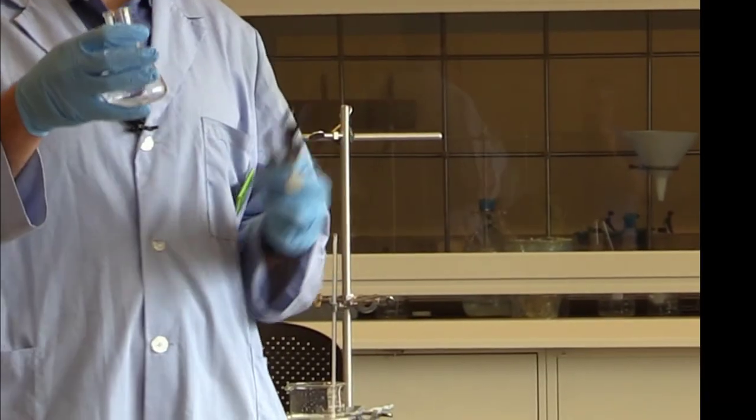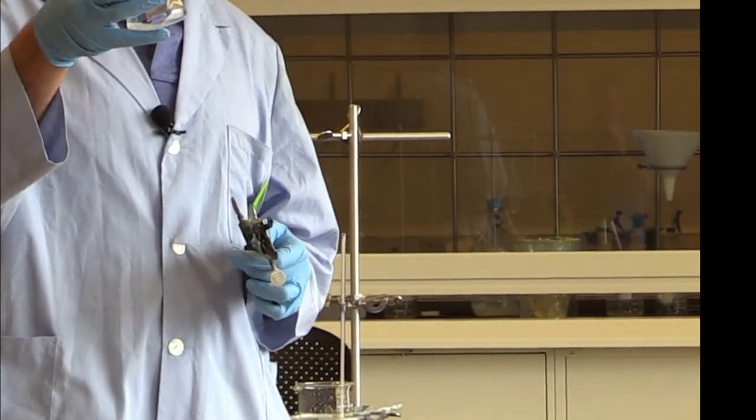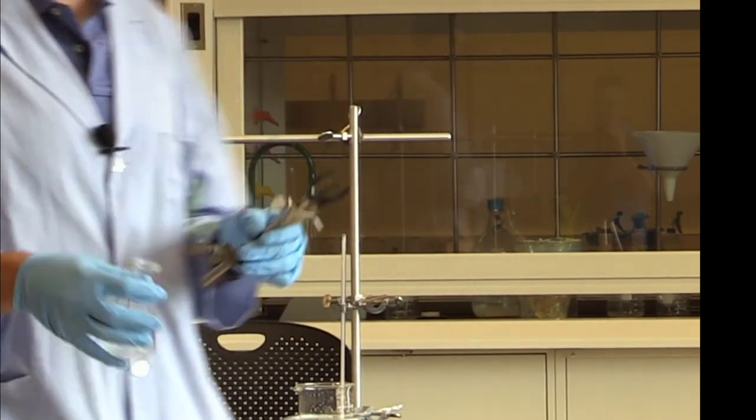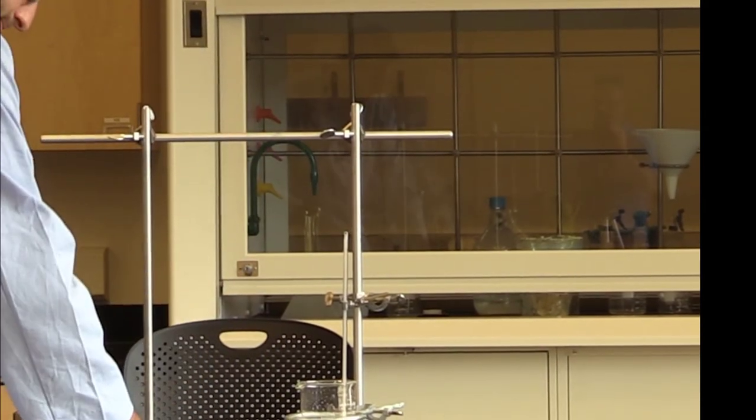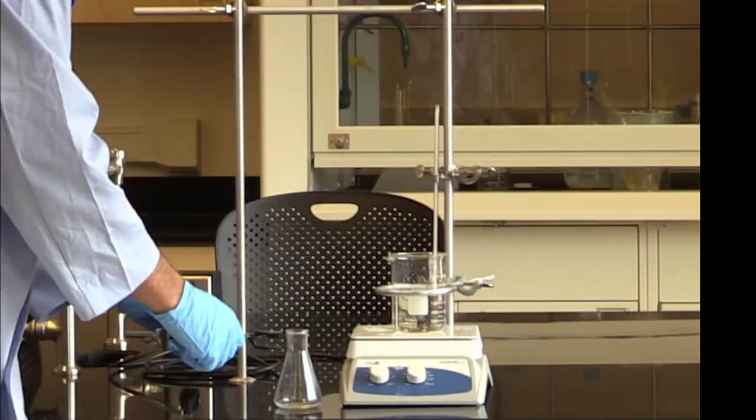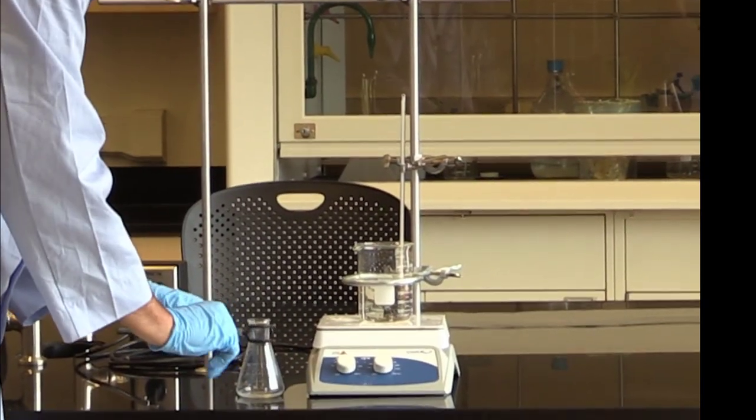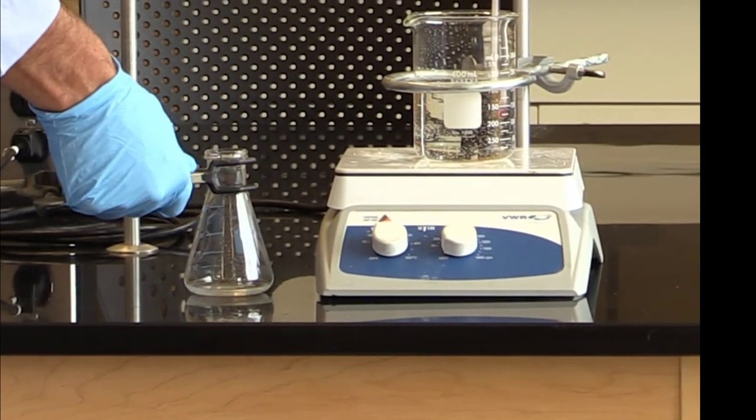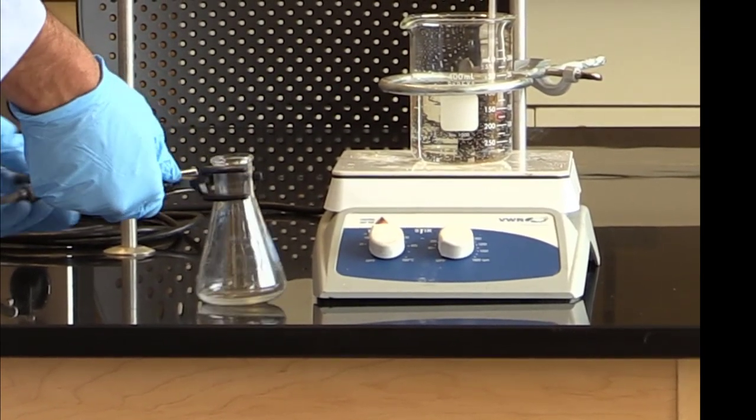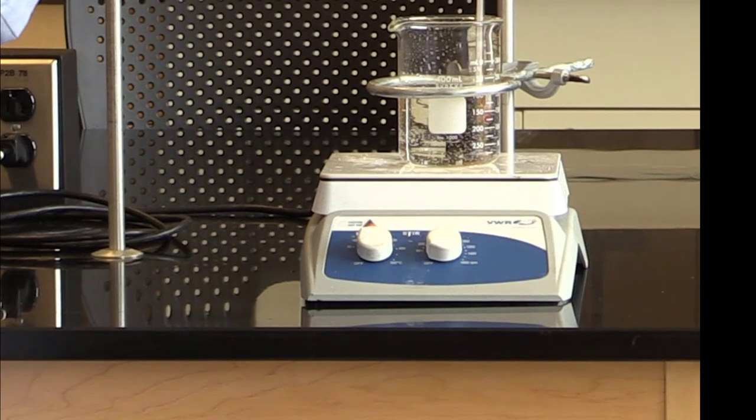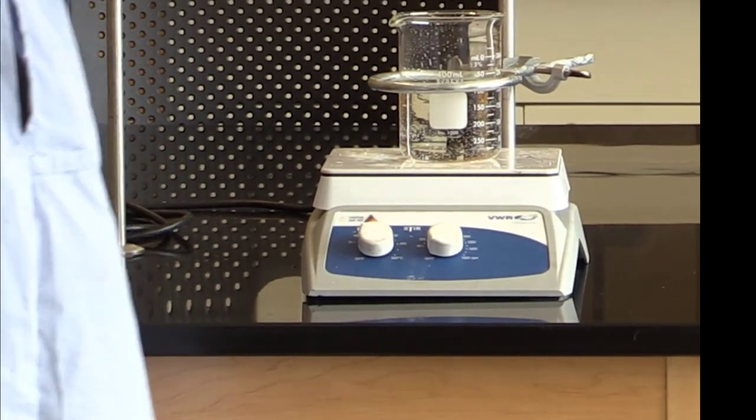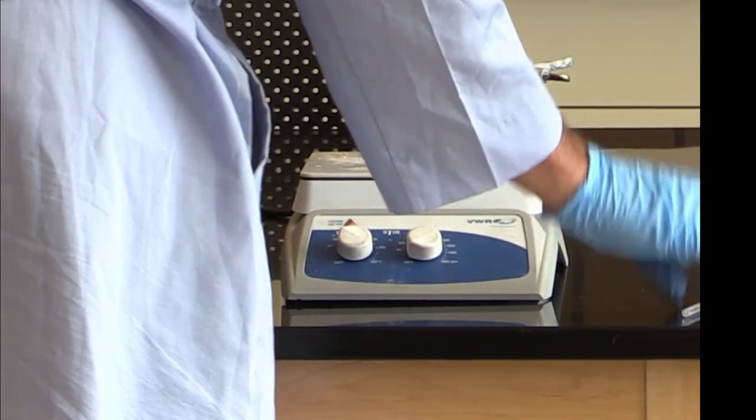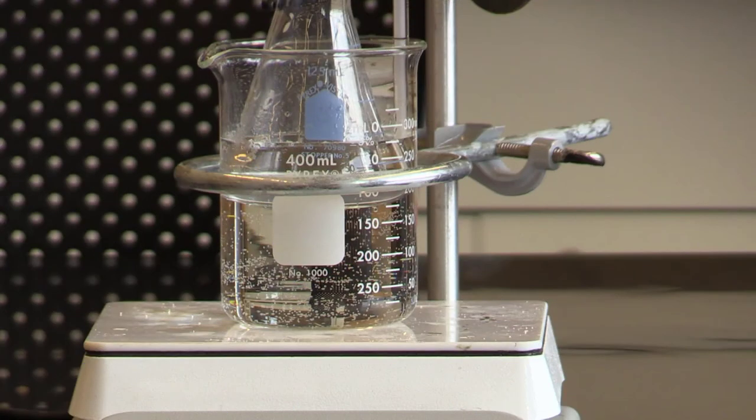This is how we're going to put our Erlenmeyer flask into our water bath. We're going to take a clamp. First clamp it outside of the water bath. We will remove the thermometer so we don't break it. Now we have our apparatus fully set up.